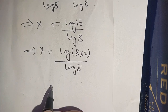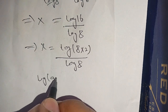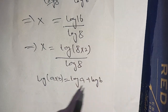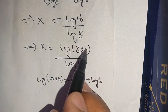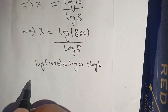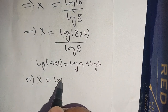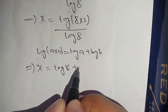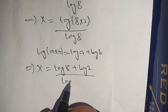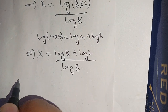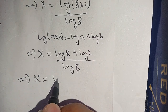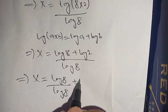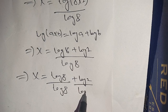Now we know that log of (a times b) is equal to log of a plus log of b. Using this identity in the numerator, we get x is equal to (log of 8 plus log of 2) divided by log of 8, which we can write as log of 8 divided by log of 8 plus log of 2 divided by log of 8.